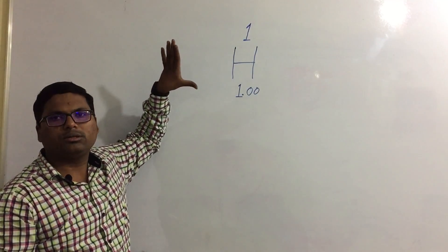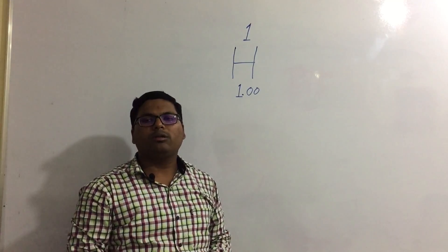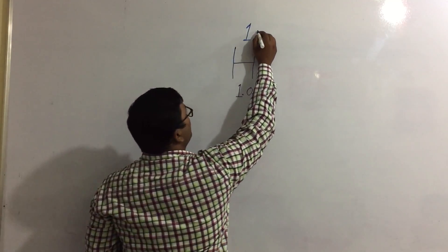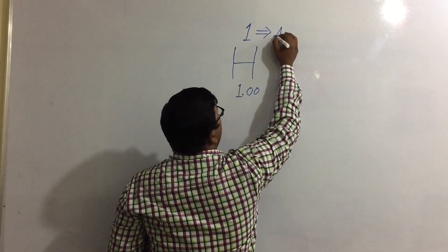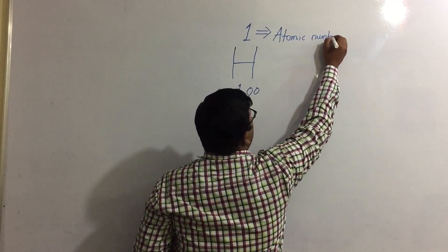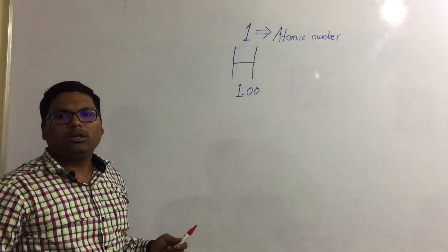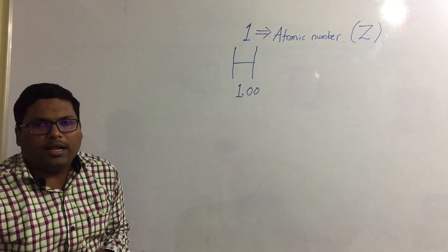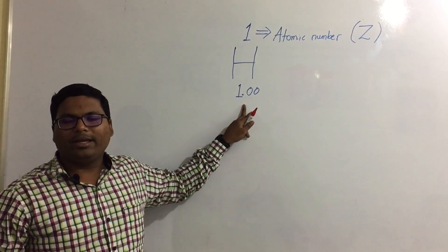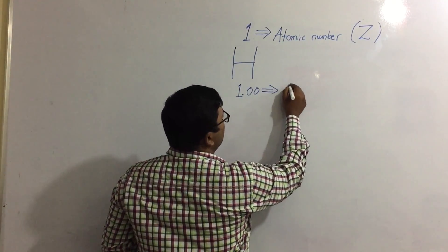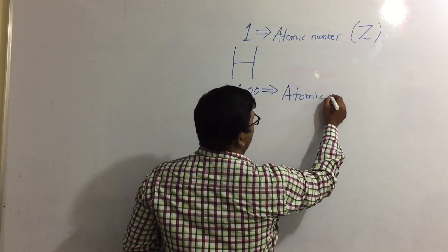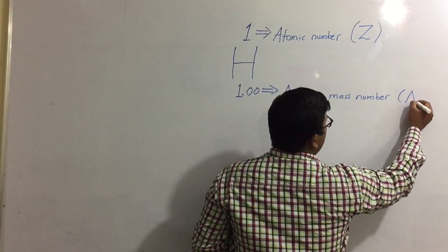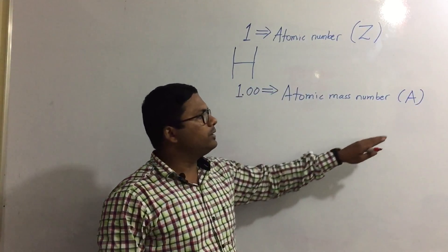Now what do these numbers describe? They describe a very important property of any atom. The number above the element is known as the atomic number, denoted by capital Z. The number at the bottom of an element is called the atomic mass number, denoted by capital A.